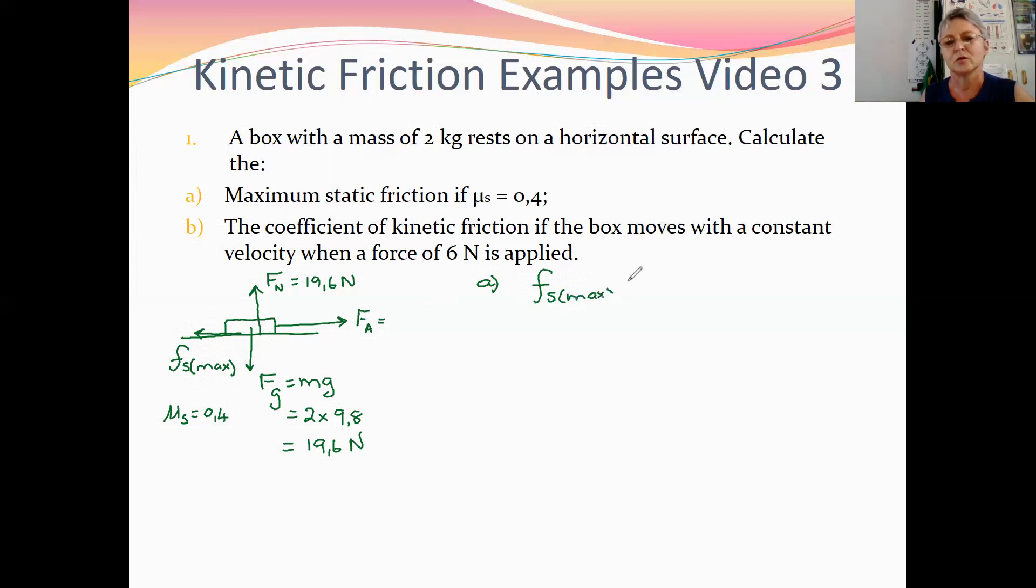And the equation is that it is mu s times the normal force. We have calculated the normal force to be 19.6 and mu s is 0.4. So the maximum static friction is 0.4 times 19.6 which is 7.84 newton.